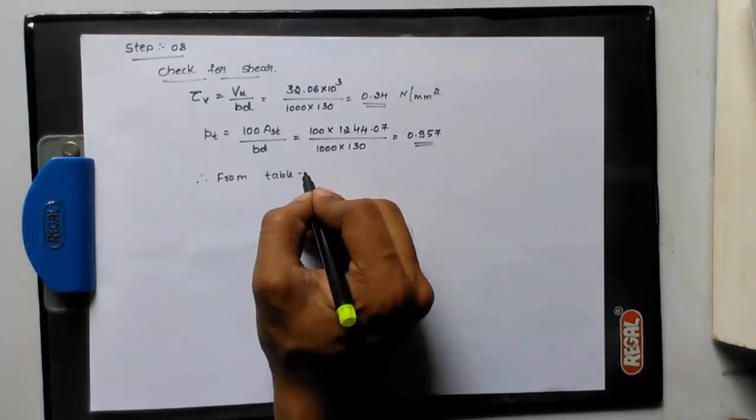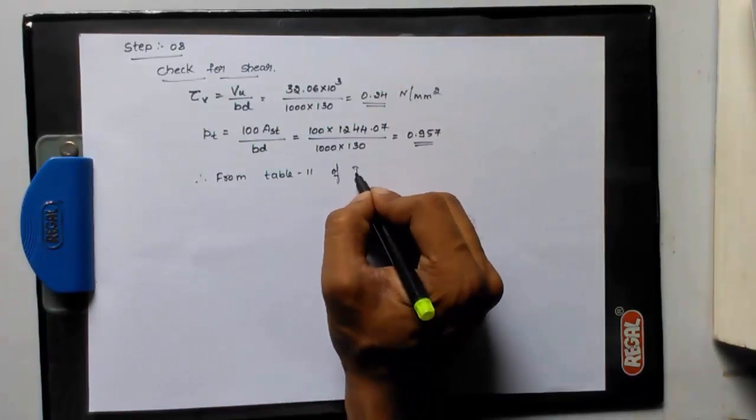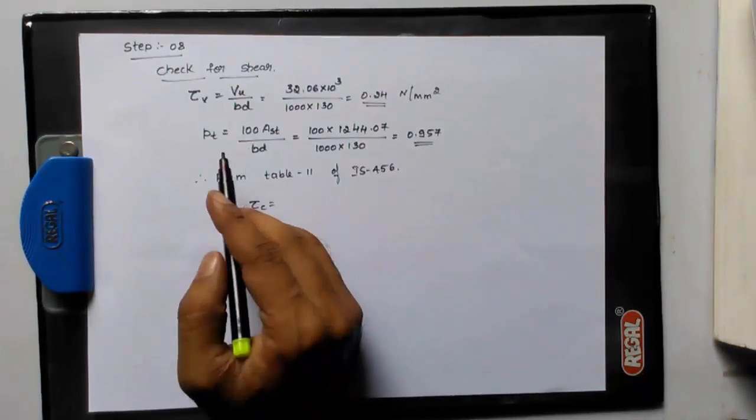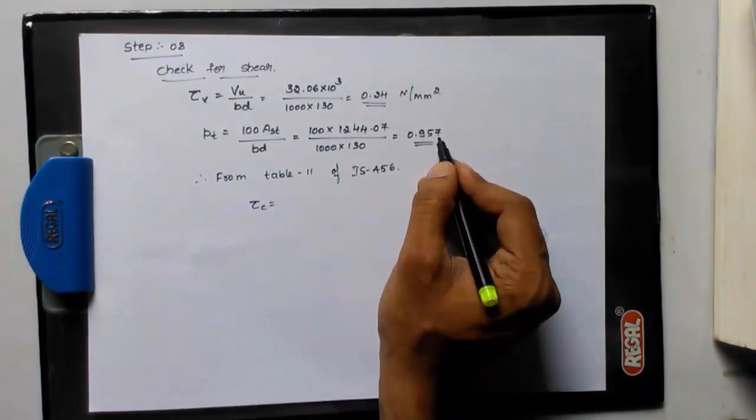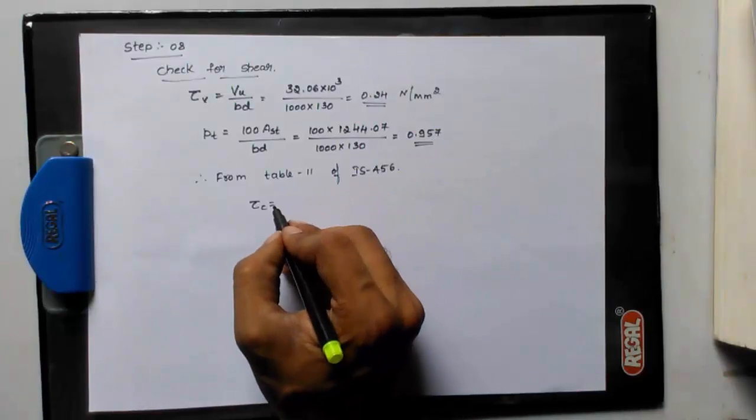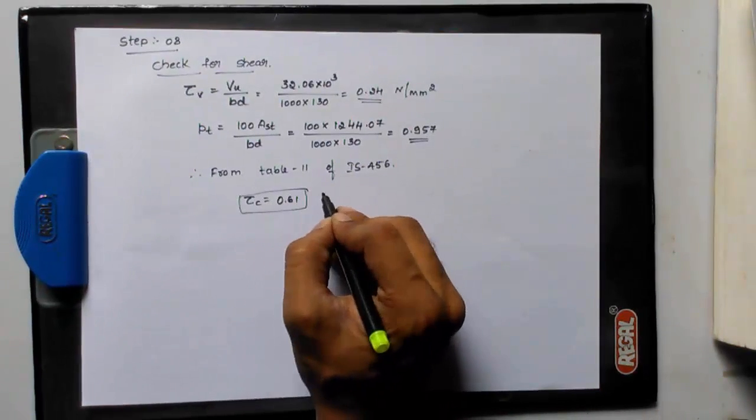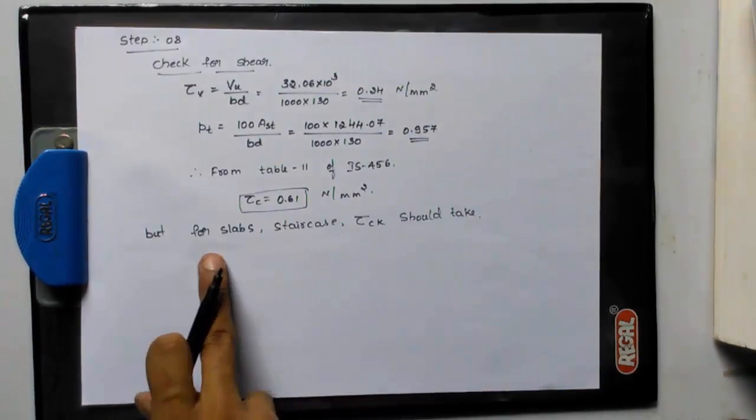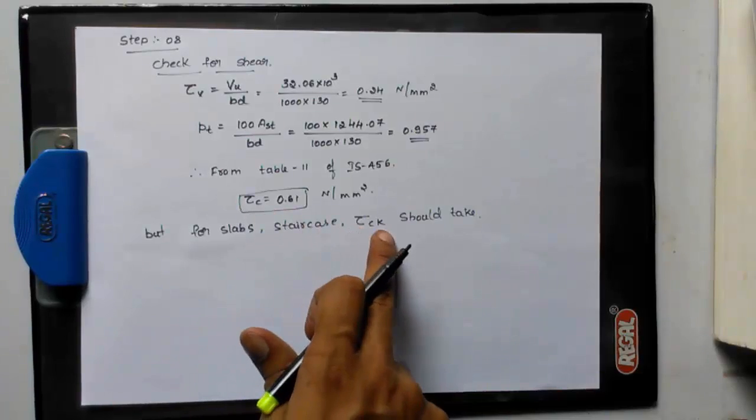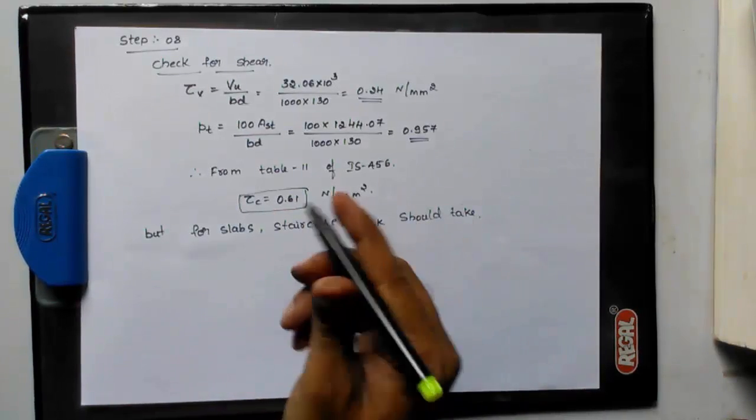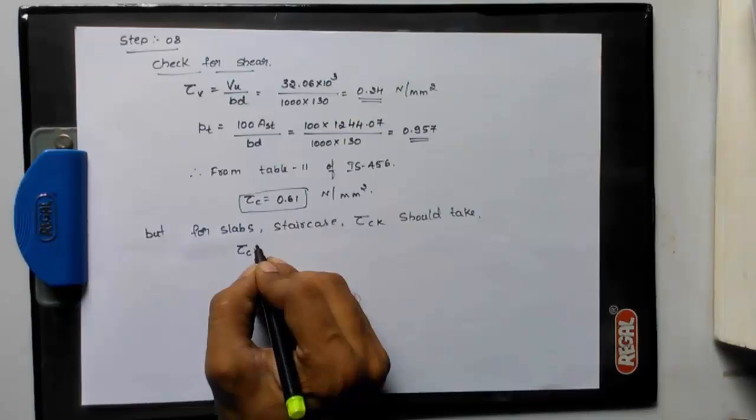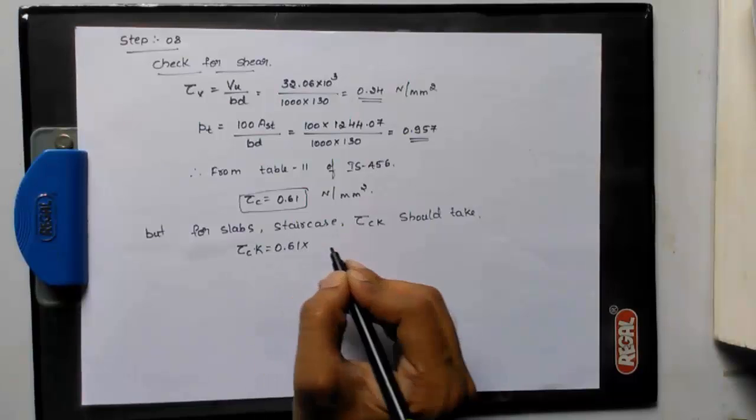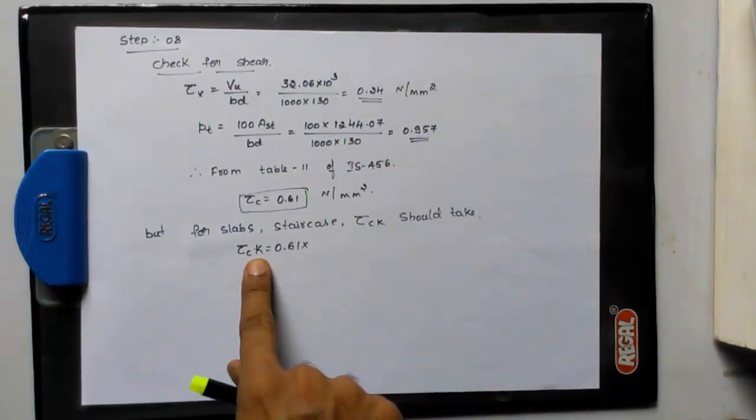Therefore, from table 19 of IS 456, we will get tau c value for pt equal to 0.957 and for M20 concrete. We will get tau c value 0.61 newton per mm square. But for slabs and staircase we need to take not tau c, tau ck should be taken. Therefore, tau ck is equal to tau c value 0.61 into this k value.